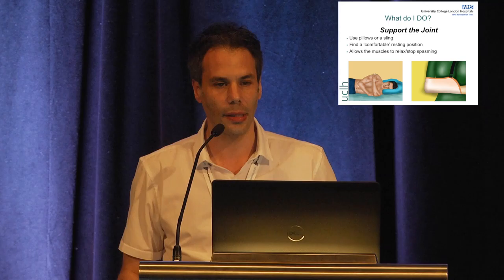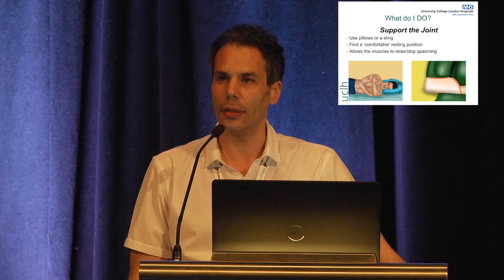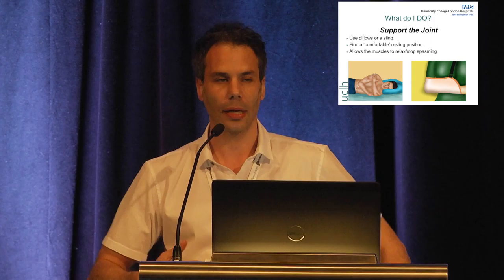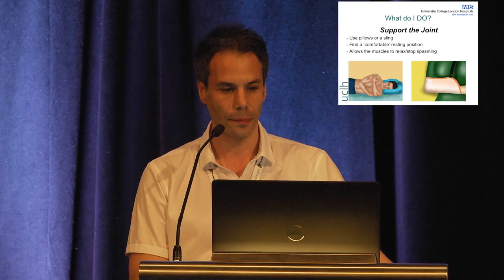Next, support the joint. If you've got pillows or a sling — if it's a shoulder, use a sling; if it's a knee or hip, use pillows. Try to support that joint, take the pressure off the surrounding muscles. That gives them something to relax into, and that's the key — letting those muscles relax. Use supports, pillows, cushions, whatever you can to support that joint.